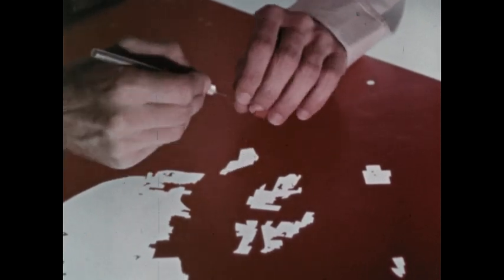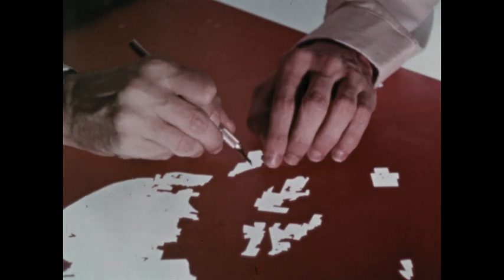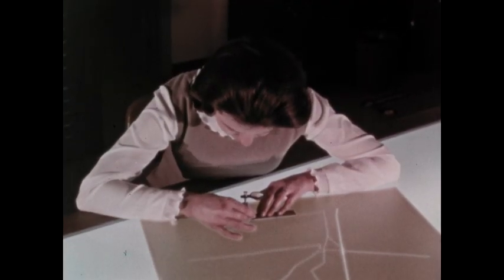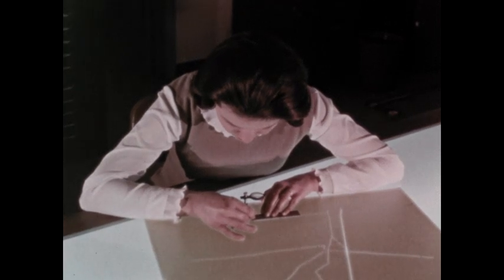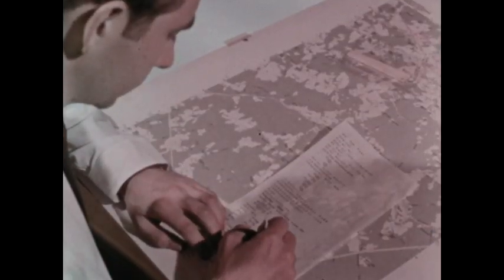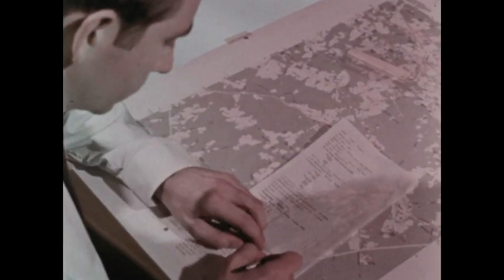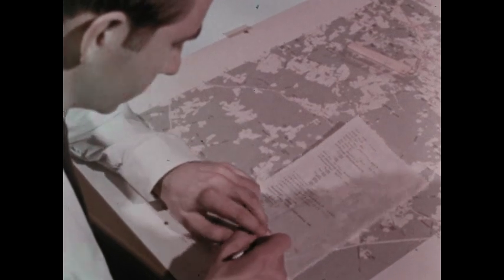These colors have become more or less standardized for maps. Still another plate will eventually reproduce roads and section lines in red. The plate containing the contour lines that describe the changing elevations of the land will be printed in brown. The plate that contains man-made features like buildings and railroads and names will be printed in black.